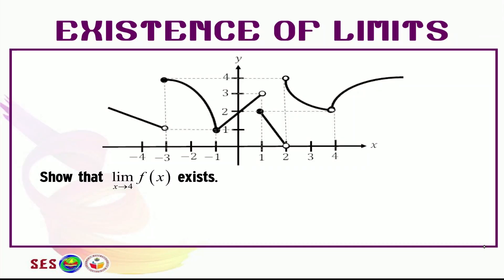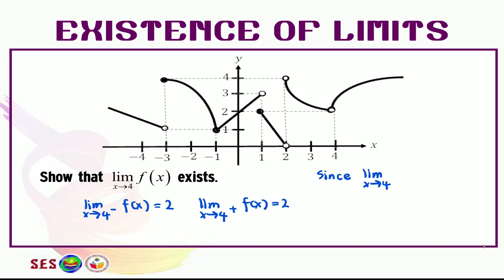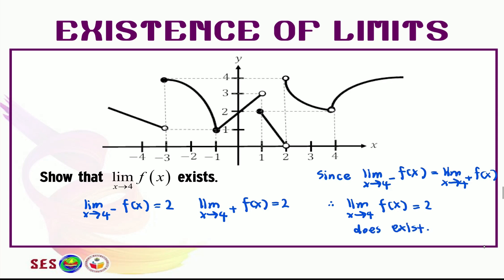Let's see if you got this correct. To prove whether the limit exists, we check the limit from both sides. The limit as x approaches 4 from the left for f(x) equals 2, and the limit as x approaches 4 from the right for f(x) is also equal to 2. To answer this question, you need a reason and a conclusion. Since the limit from the left equals the limit from the right, therefore the limit as x approaches 4 for f(x), which equals 2, does exist. Make sure to have your statement for reason and your statement for conclusion.